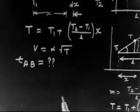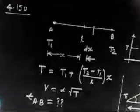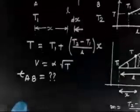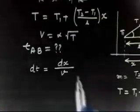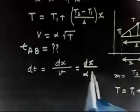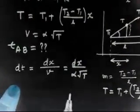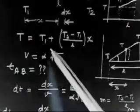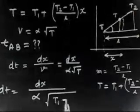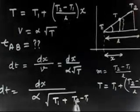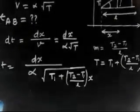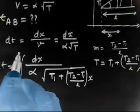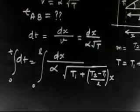Now let us find the time. For a small distance dx at position x, we can assume the temperature is almost constant, so velocity is almost constant. Velocity is given by v = α√T. Therefore the small time element dt equals dx divided by α√T, where T = T1 + (T2 minus T1) divided by L into x. We integrate from 0 to L.